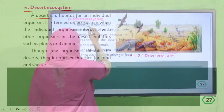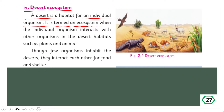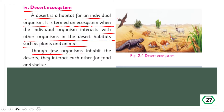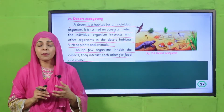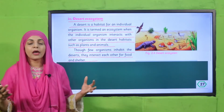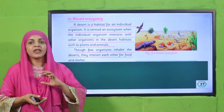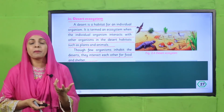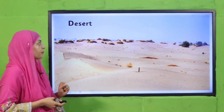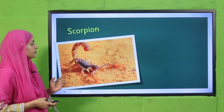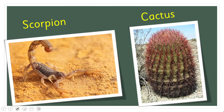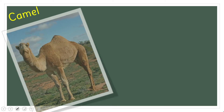A desert is a habitat for an individual organism. It is termed an ecosystem when the individual organism interacts with other organisms in the desert habitat, such as plants and animals. Cactus is a plant that survives in the desert. Other desert inhabitants include camels and snakes.